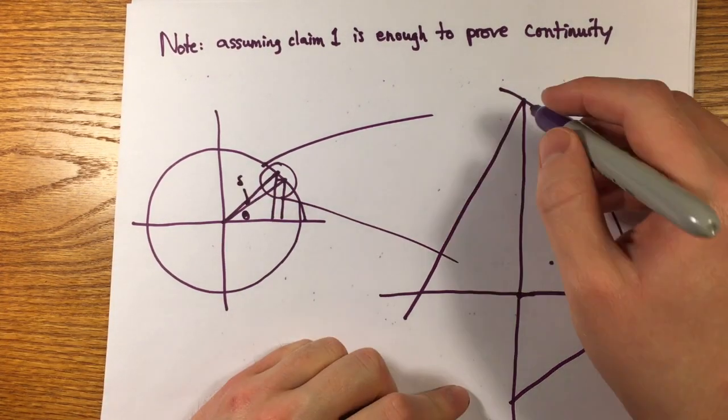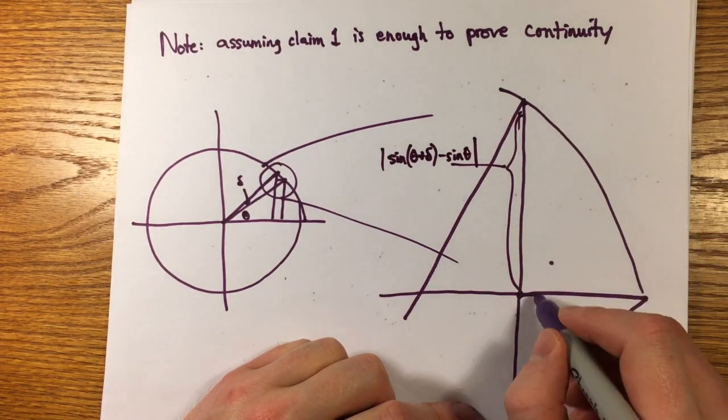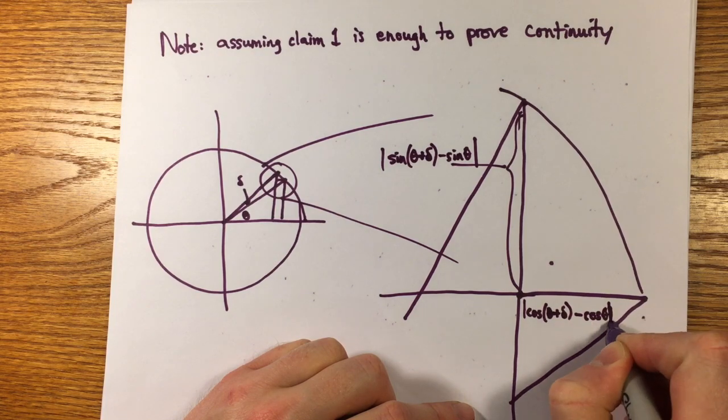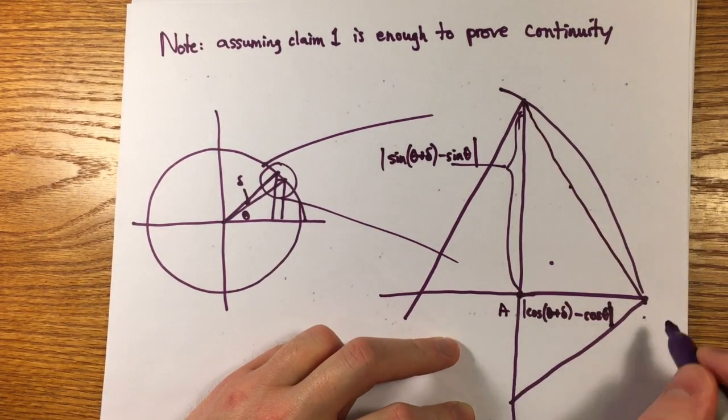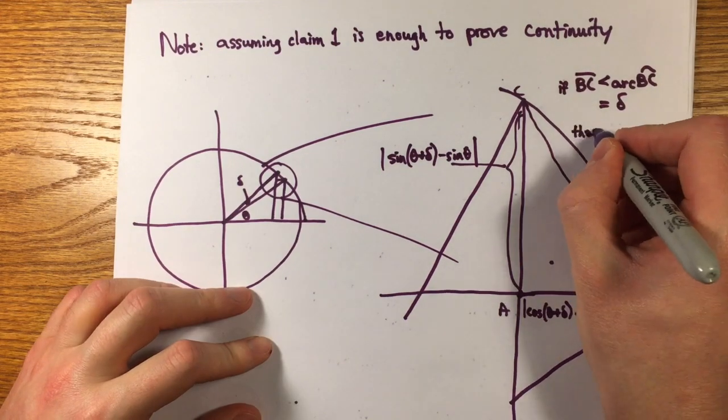Here's a diagram showing the differences between sines and cosines separated by a small angle delta. And let's blow up the key part of that picture. The differences between sines and cosines of nearby angles are the legs of a right triangle, which, if we believe the claim, are both shorter than the arc of length delta. This gives Lipschitz continuity of sine and cosine.